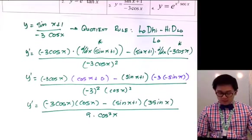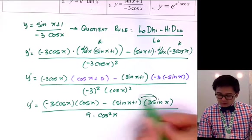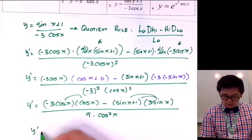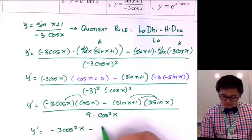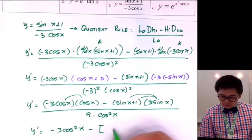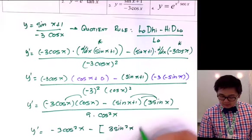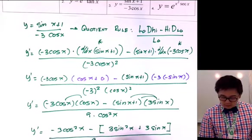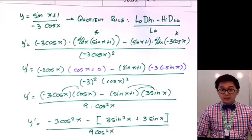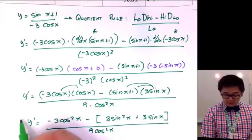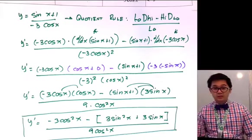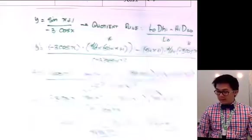We can distribute and multiply to get y prime equals negative three cosine squared x minus three sine squared x plus three sine x, all over nine cosine squared x. We'll stop here because we already have our derivative — we just clean it up a bit by simplifying the rational function. This is an acceptable answer for problem number three.